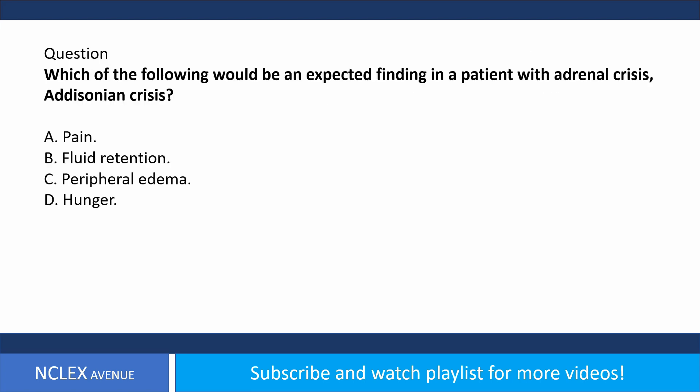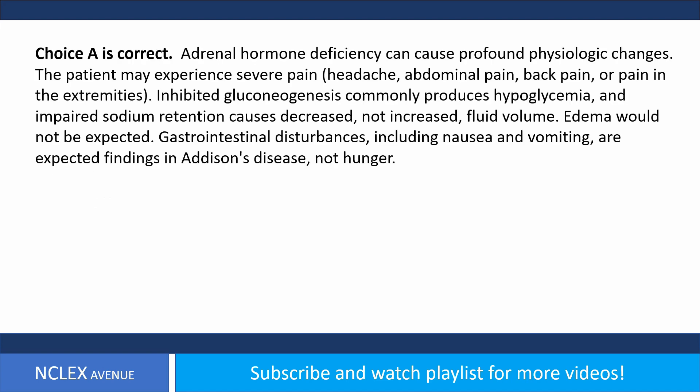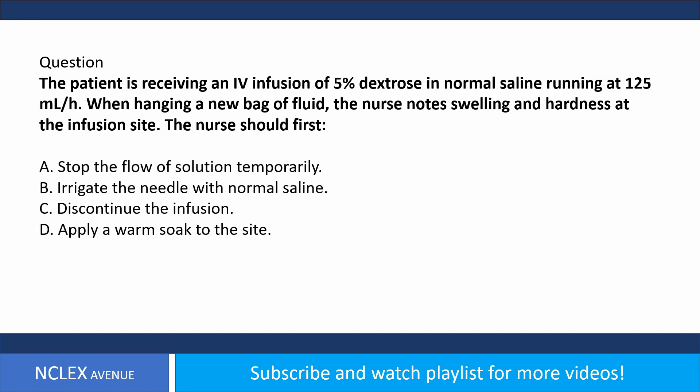Bilirubin level is not related to the pathophysiology of Addison's disease. Hyperpigmentation is not related to glucocorticoid therapy effects. Question: Which of the following would be an expected finding in a patient with adrenal crisis? A) Pain, B) fluid retention, C) peripheral edema, D) hunger. Answer choice A is correct. Adrenal hormone deficiency can cause profound physiologic changes including severe pain, headache, abdominal pain, back pain, or pain in the extremities.